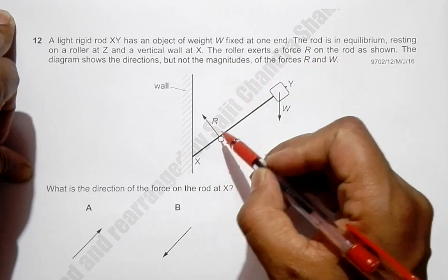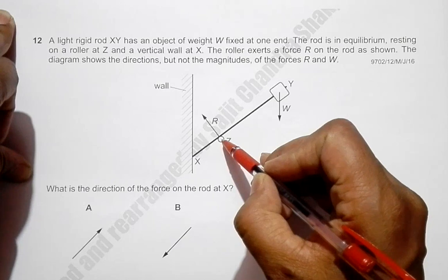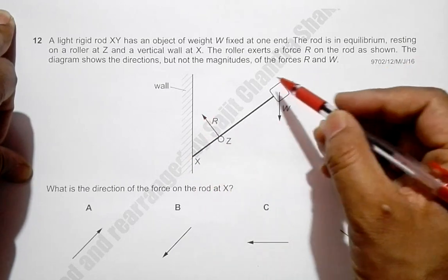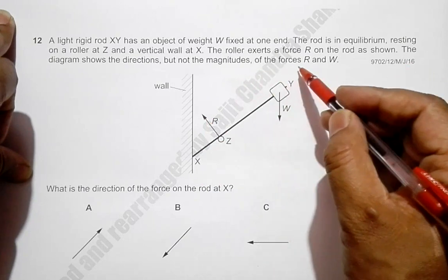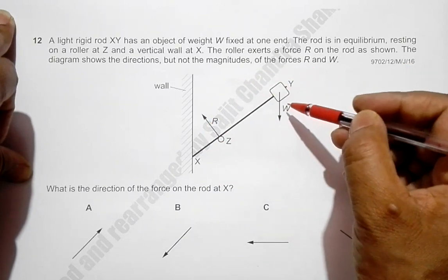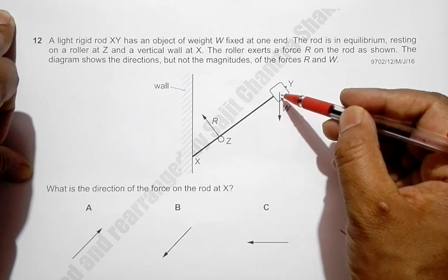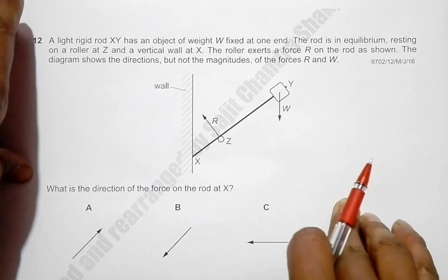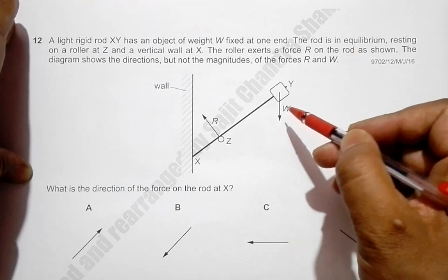So this roller will be exerting a force R on this rod. The diagram shows the directions but not the magnitudes of the forces R and W. So here the direction of the forces R and W are exact, but their magnitudes are not exact. That means the length of the arrows do not exactly represent the magnitudes of the vectors here.